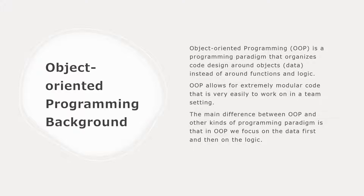It'll be a lot easier to understand once you're doing some programming and have a bit more experience with OOP, but that's the main gist of it. OOP allows for extremely modular code and it's very easy to work in a team setting. The code can be split up across multiple team members who can work independently on a single class or multiple classes, then combine their work together very easily. In OOP, we're focusing on data first — on getting categories and classes and defining data in a useful way for computation.